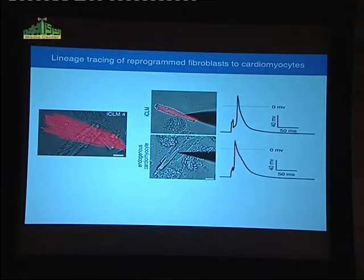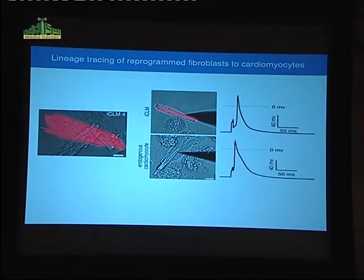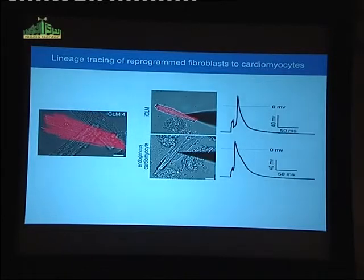We can activate tomato in these fibroblasts, induce a myocardial infarction, inject GHMT, and ask: can we find any tomato-positive cardiomyocytes? After dissociating cardiomyocytes from these hearts following reprogramming, you can see two unlabeled cardiomyocytes and an intensely tomato-positive cardiac myocyte — these are called induced cardiac-like myocytes, ICLMs. Patch clamping on a tomato-positive myocyte — presumably from a fibroblast — and a native endogenous myocyte both have action potentials that look quite similar.